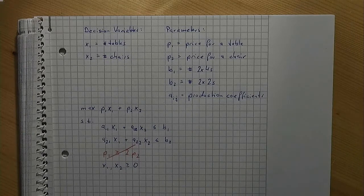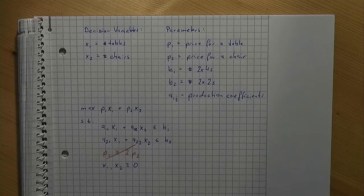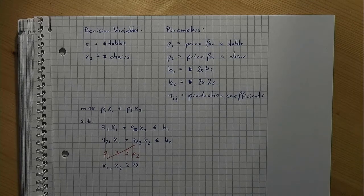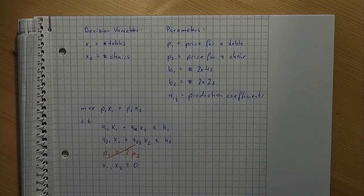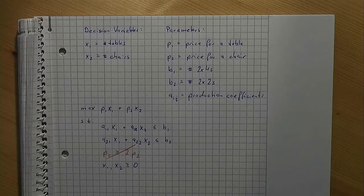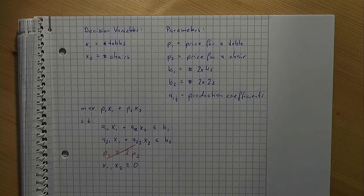So how do we handle the information that the price of a table is at least twice the price of a chair? Prices are parameters. They are set in advance. The fact that prices have to fulfill certain restrictions should be specified in the parameters section.